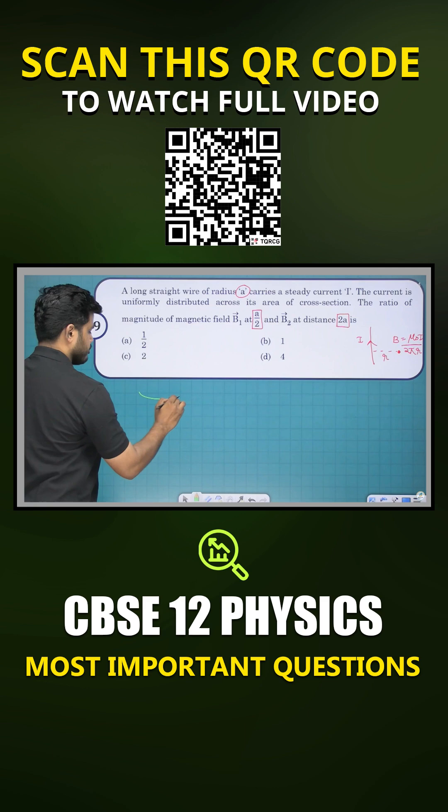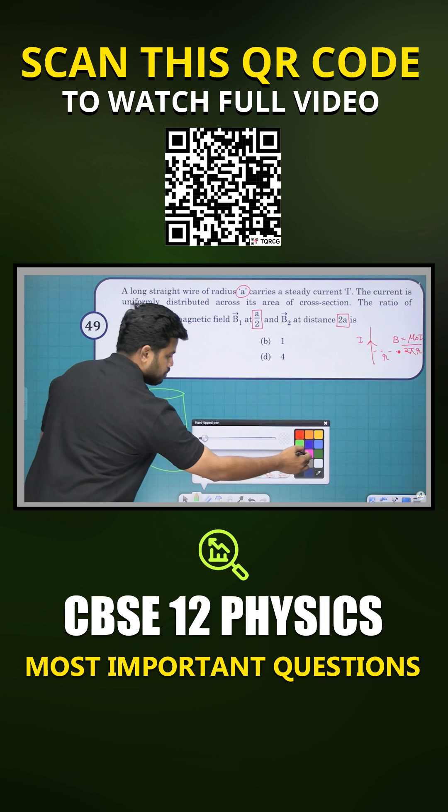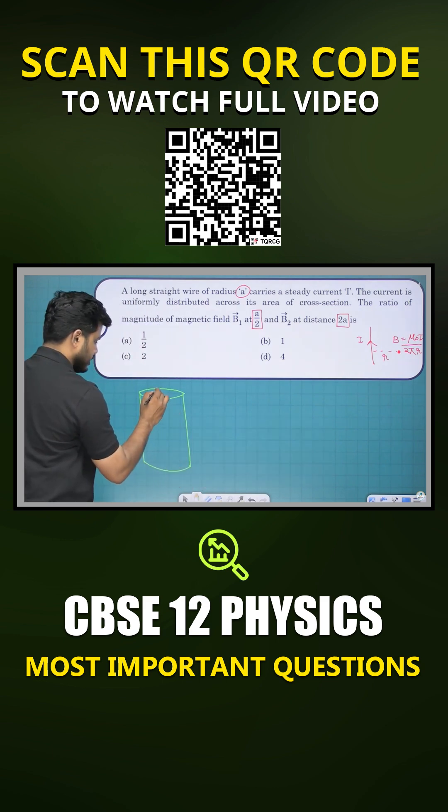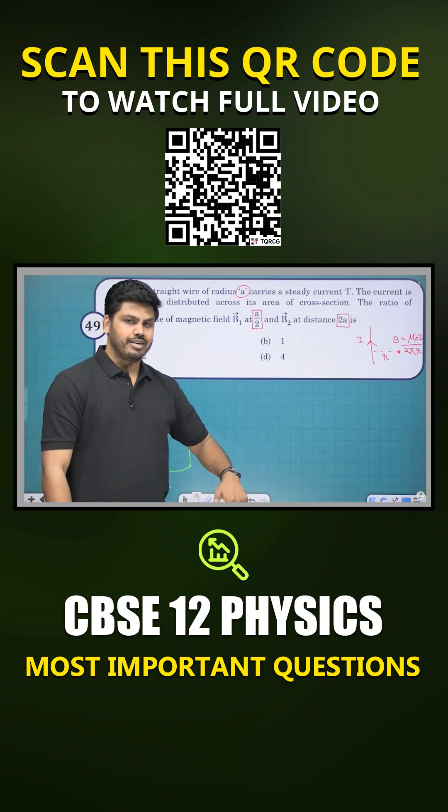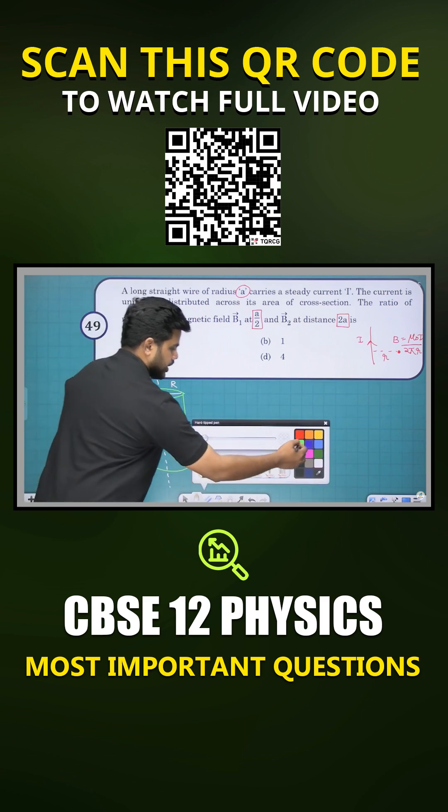Look at this. We have a current carrying conductor. We are going to apply Ampere's circuit law to find out the magnetic field at a point inside the conductor. Let me take the radius of the cross section as capital R. Let me consider a point here. The distance is R by two. So that point is inside the wire.